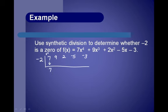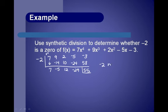We drop the first term, then multiply: negative 7 times 2 is negative 14. Combine those: 9 plus negative 14 is negative 5. Multiply: negative 2 times negative 5 is 10. Add: 2 and 10 is 12. Multiply: 2 times negative 12 is negative 24. Combine: we get negative 29. Negative 2 times negative 29 is positive 58, and combining that with negative 3 gives us a remainder of 55. Because the remainder was not 0, negative 2 is not a zero of the function.